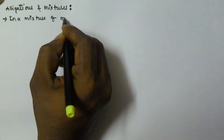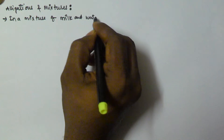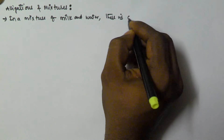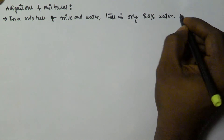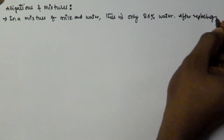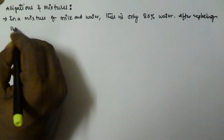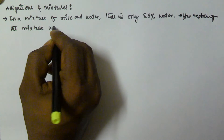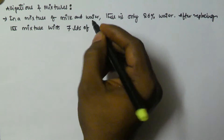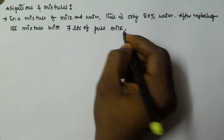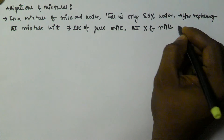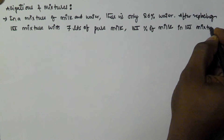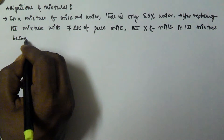The problem is: in a mixture of milk and water, there is only 26% water. After replacing the mixture with 7 liters of pure milk, the percentage of milk in the mixture becomes 76%.